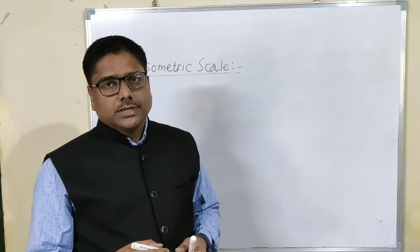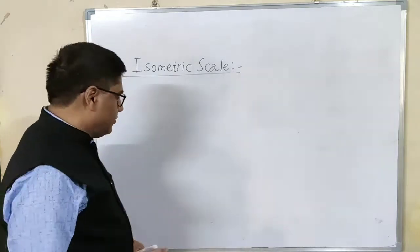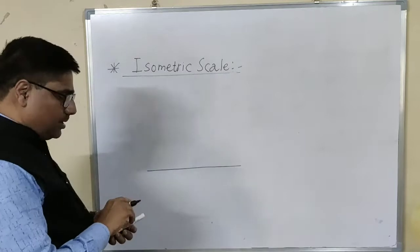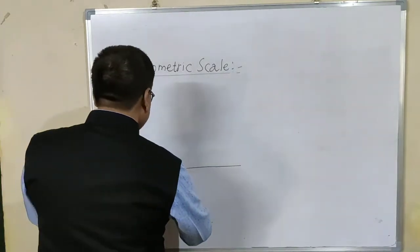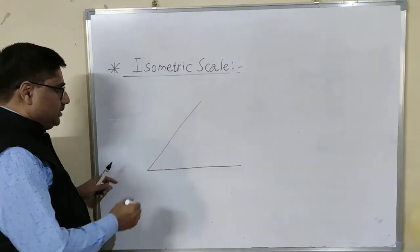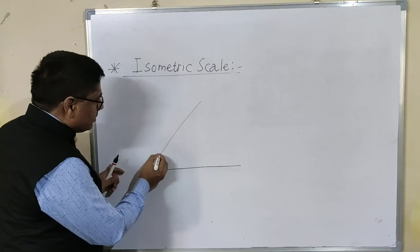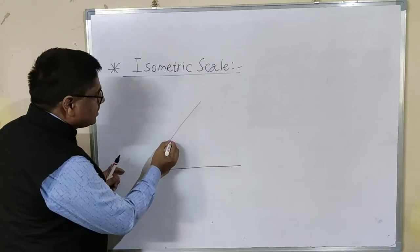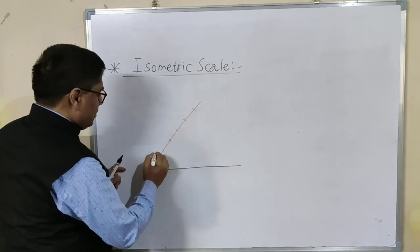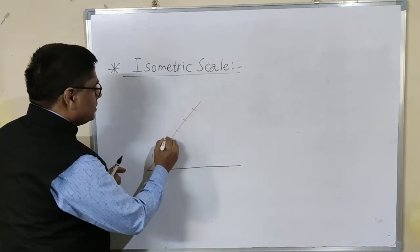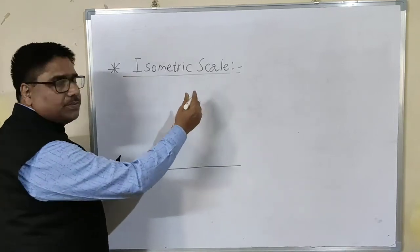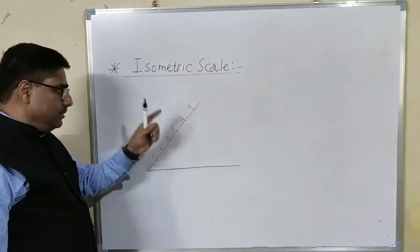Now, how to construct isometric scale? First of all, draw one horizontal line, then draw line at 45 degree angle. Mark different points with equal intervals, the interval of 1 cm: 1, 2, 3, 4, 5, 6 as per requirement. You can extend these divisions.